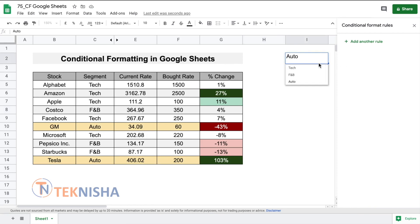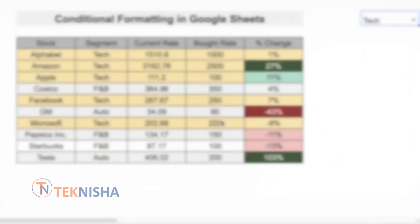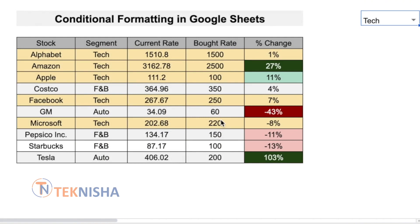If you now change it to tech, you can see all the tech stocks being highlighted. Conditional formatting is really simple and easy to implement. It's a great tool to visually indicate important aspects of your data. I hope that this tutorial was of use to you. If you liked it, don't forget to subscribe to the channel. Till next time, ciao.